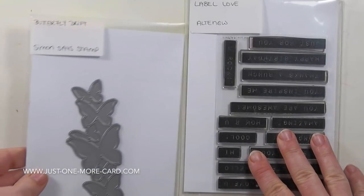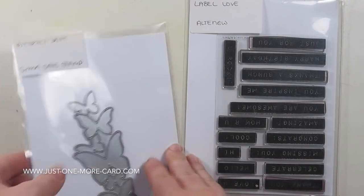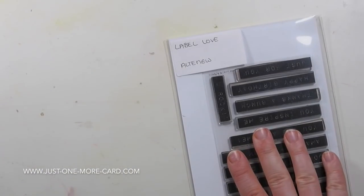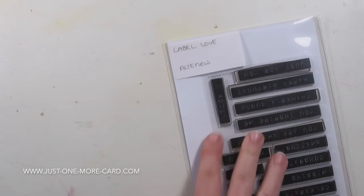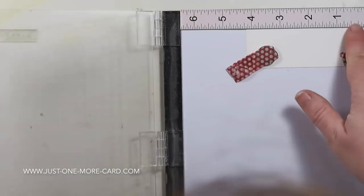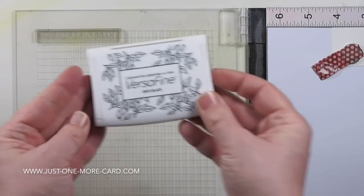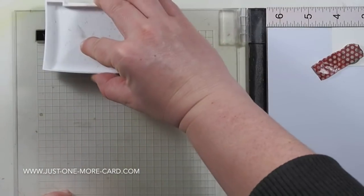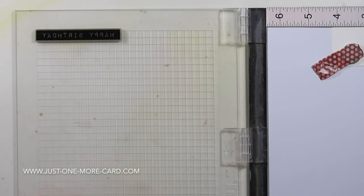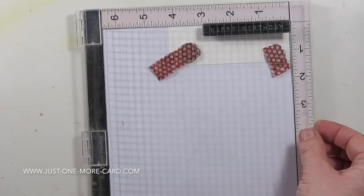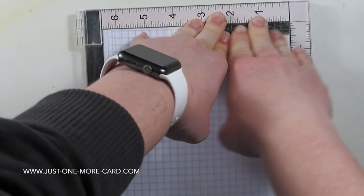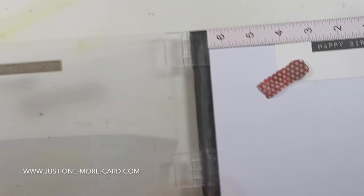Now I'm using the Butterfly Drift die set by Simon Says Stamp and the Label Love by Altenew. The die set gives you a wonderful intricate die cut, but we'll start with the Label Love stamp set. The reason for that is I want to stamp my sentiment with Versafine black ink, it's a pigment ink. It dries rather quickly, but since there is so much of it, I'm stamping the sentiment at the very beginning of the crafting process so it has time to dry until I'm done with the rest. Just stamping this and you can see this nice rich black color.